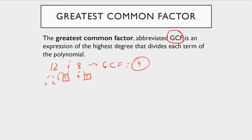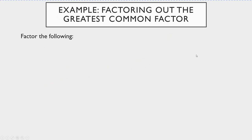Let's factor 10x cubed minus 4x squared. Start with the coefficients — think about 10 and 4. You can rewrite 10 as 2 times 5, and 4 as 2 times 2. Right off the bat you can see they both have a factor of 2, so I'm going to factor that out and undo the distributive property. Now look at the variables: x cubed is the same thing as x squared times x.